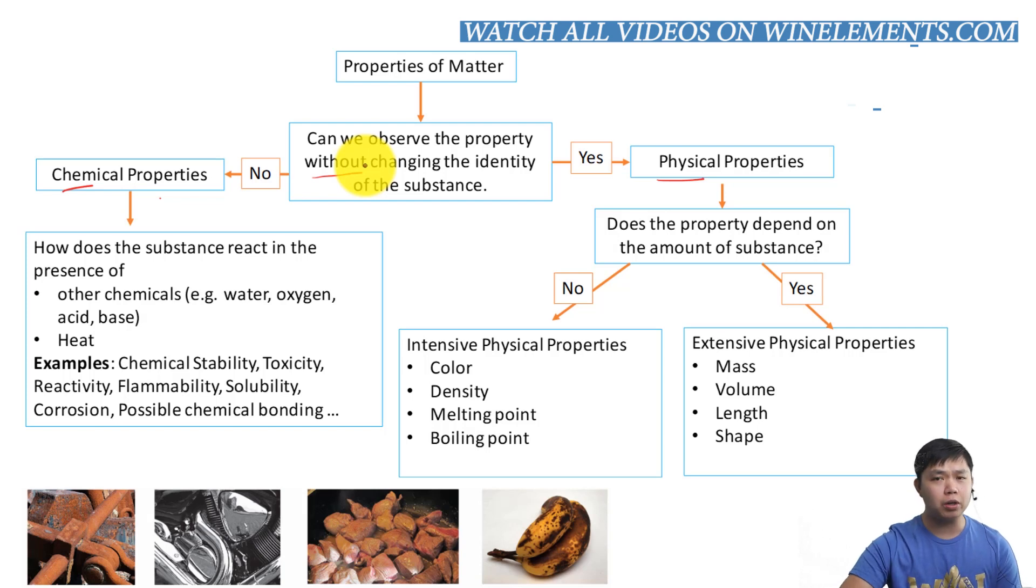Physical properties are grouped into two types: intensive and extensive properties. And the key difference is, does the property depend on the amount of substance? If the answer is yes, that is extensive, is external factor. Think of it that way. Extensive, X means external somehow. So therefore, in this case, the external factor is amount.